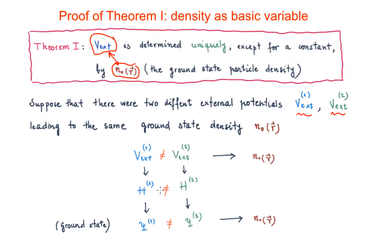If we have two different Hamiltonians, the ground states of these two Hamiltonians are going to be different. Psi1 is the ground state of Hamiltonian H1, which includes the external potential Vx1. And Psi2 is the ground state wave function of Hamiltonian H2, which includes the external potential Vx2.